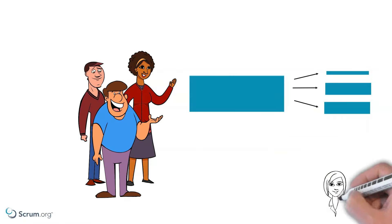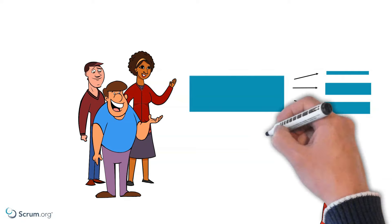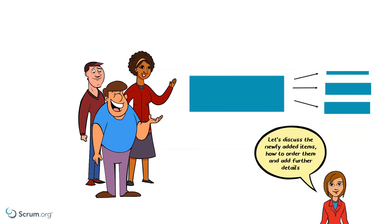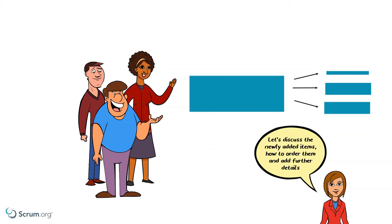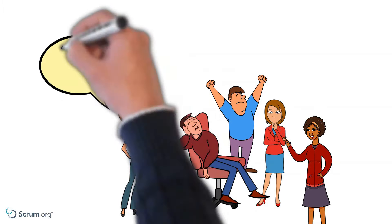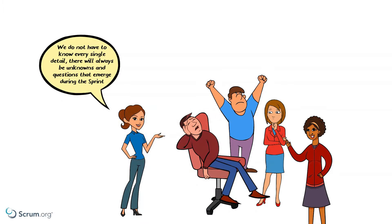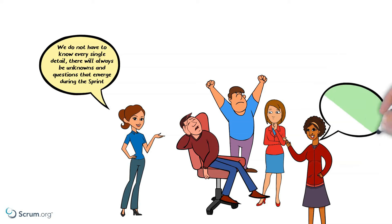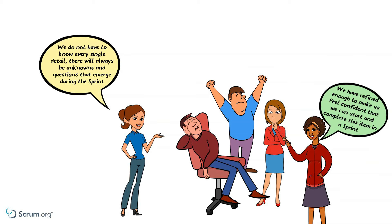Cassie suggests they discuss the order of the newly added Backlog items, add further details, and acceptance criteria. At one point, the team gets stuck into a very detailed discussion. Robin steps in and points out that it's fine that they do not know everything up front. Questions and unknowns can still emerge during the sprint. As long as they have enough information to start the Product Backlog item in the sprint, and they have sized it small enough so that they are confident they can complete the item within a sprint.